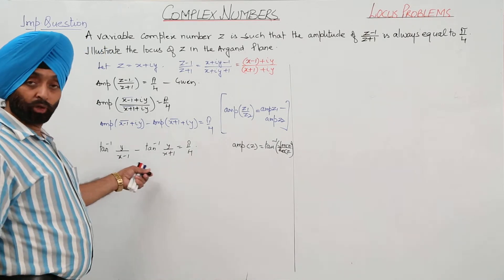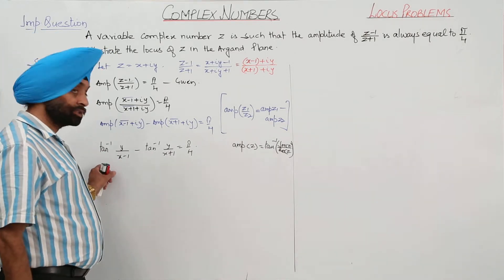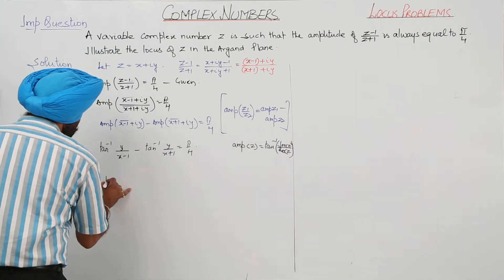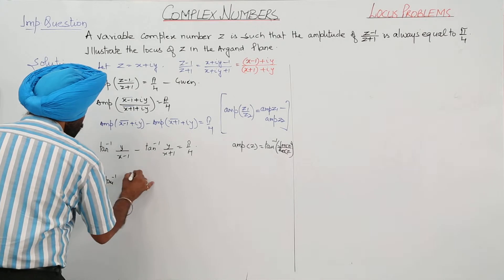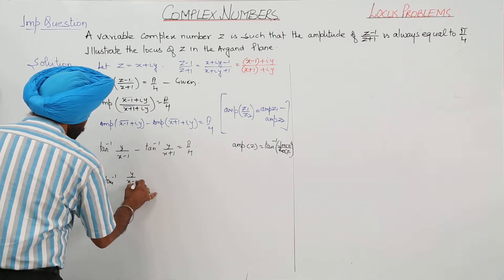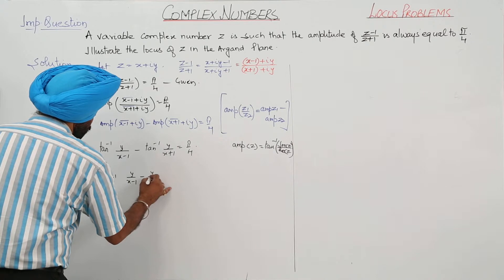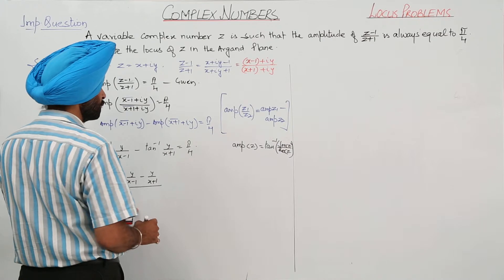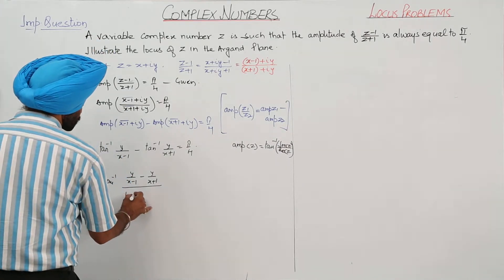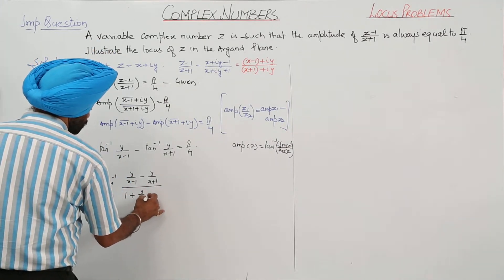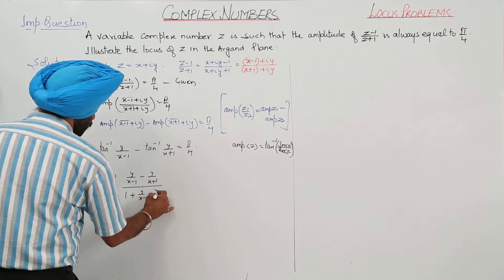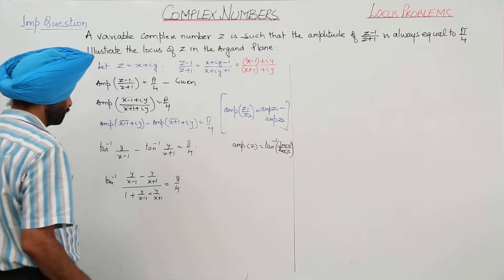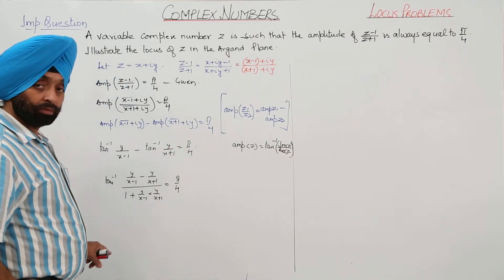We use the inverse trigonometric identity: tan inverse a minus tan inverse b equals tan inverse of (a minus b) upon (1 plus ab). Applying this: tan inverse of [(y/(x−1) − y/(x+1)) upon (1 + (y/(x−1))·(y/(x+1)))] equals π/4.